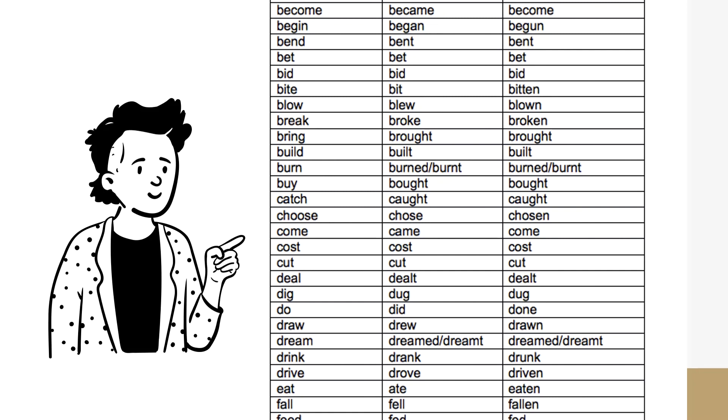We're going to take a look at some more examples. To my far right, these are what you called past participle, but we're going to focus today on the simple present tense and the past tense. Become, became. Begin, began. Bend, bent. Bet, bet. Bid, bid. Bite, bit.